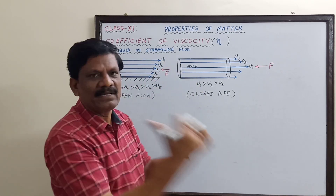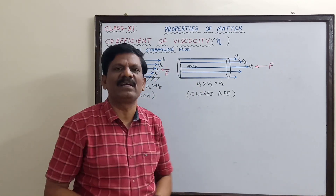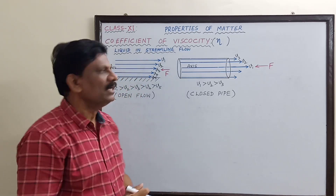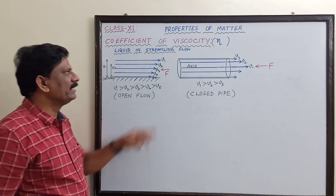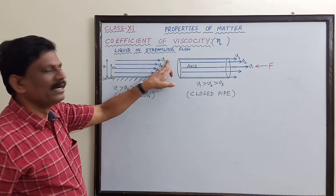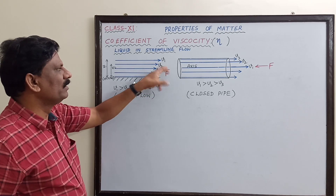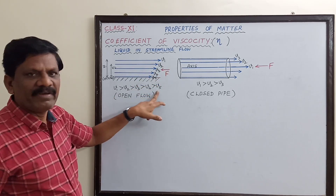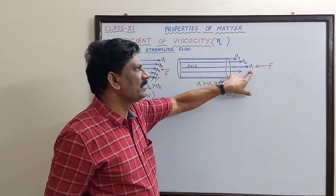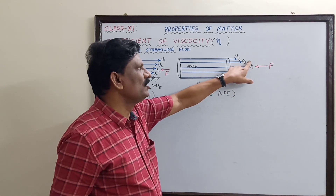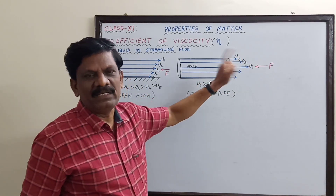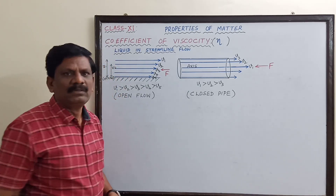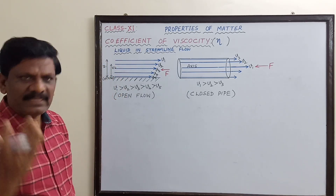The last coaxial cylindrical layer in contact with the inner walls of the tube will have the least velocity, assumed to be zero. In both cases you can see v1 > v2 > v3 and so on.